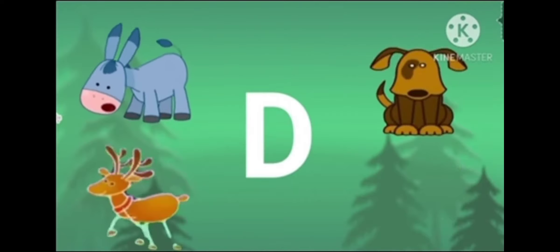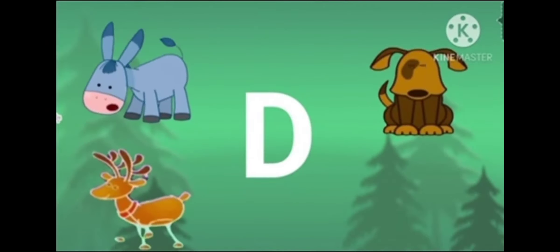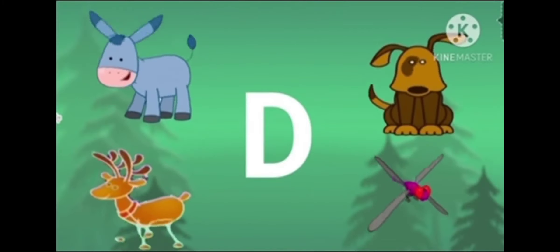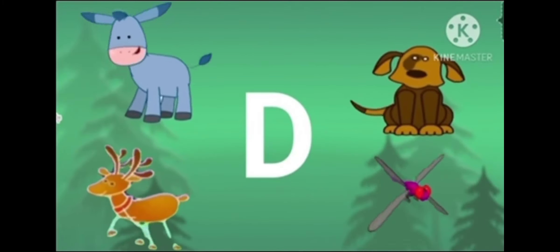D is for donkey, dog and deer. D is for dragonfly with its wonderful wings. E is for elephant, earthworm and emu.